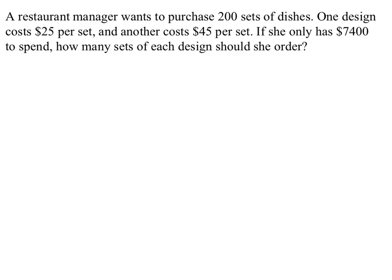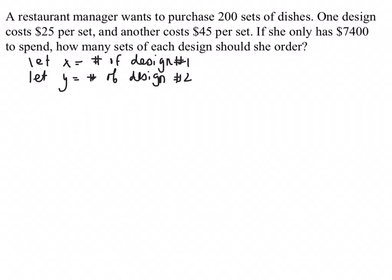We're going to use these to solve systems of equations from word problems. A restaurant manager wants to purchase 200 sets of dishes — one design costing $25 per set and another costing $45 per set — and she only has $7,400 to spend. Whenever you're solving a word problem, the first thing you should do is define your variables. I let x be the number of design 1 dishes and y be the number of design 2 dishes. Usually each sentence is an equation. The first sentence says she wants 200 total, so x plus y equals 200.